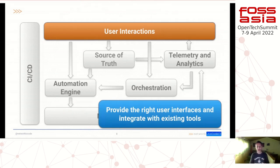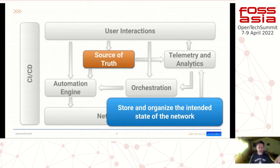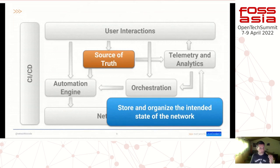Once you have the user interfaces, you need to focus on defining how your network should look. Traditionally, network operations have worked such that the state of the network is the state — there is no reference. The reference, if there is one, is in your head or maybe in a diagram on a wall, but nothing more sophisticated. To achieve the goal of automating your network, you have to properly define what is the intended state — what the network should look like. We call this the source of truth, where your variables and data model are defined to eventually move into the desired state, including how you want routing protocols to be controlled.